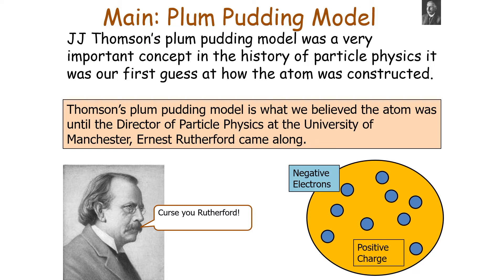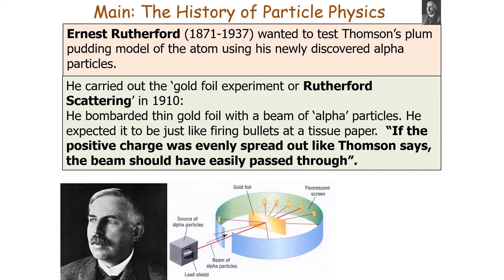Thomson's plum pudding model was what we believed about the atom until Ernest Rutherford, director of particle physics at the University of Manchester, carried out the gold foil experiment — or Rutherford Scattering experiment — in 1910 to test whether the plum pudding model was true. He bombarded thin gold foil with beams of alpha particles, expecting it to be like firing bullets at tissue paper. If the positive charge was evenly spread out as Thomson said, the beam should easily pass through.